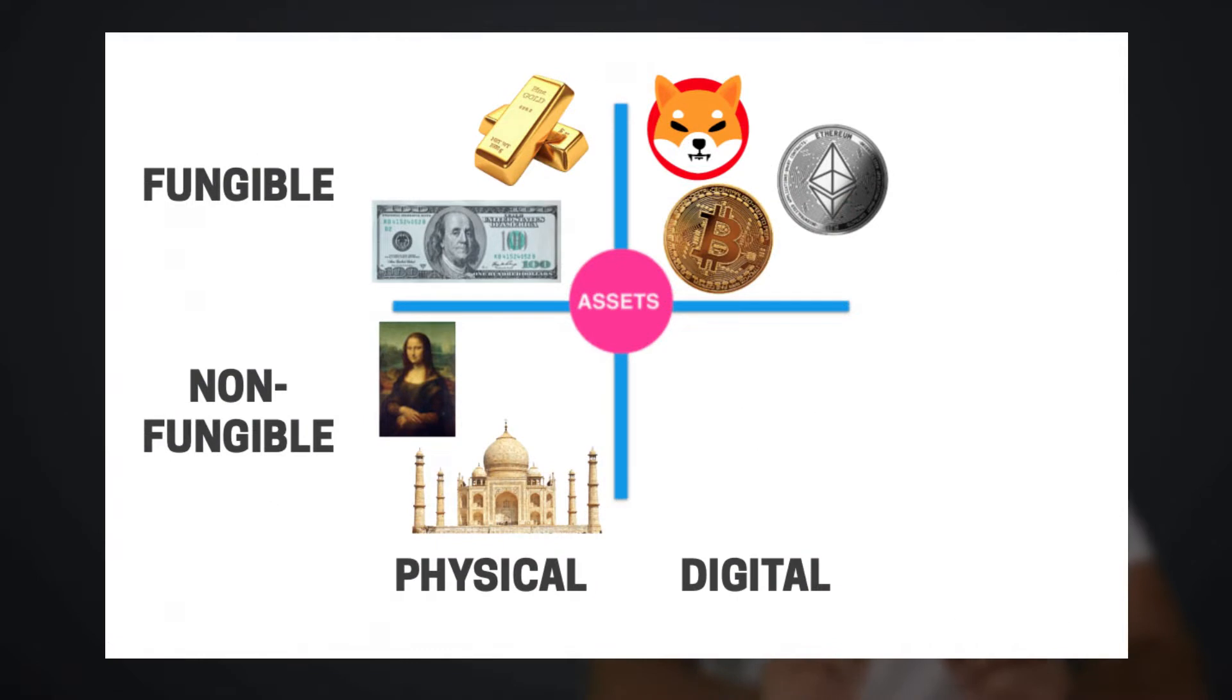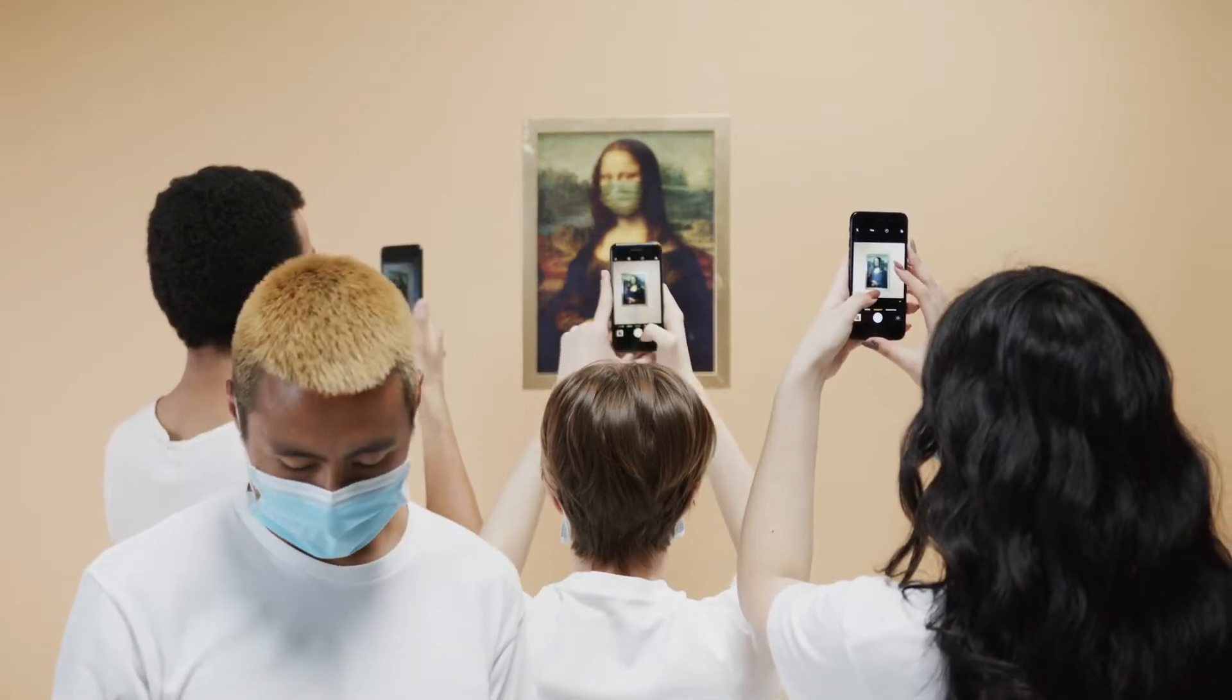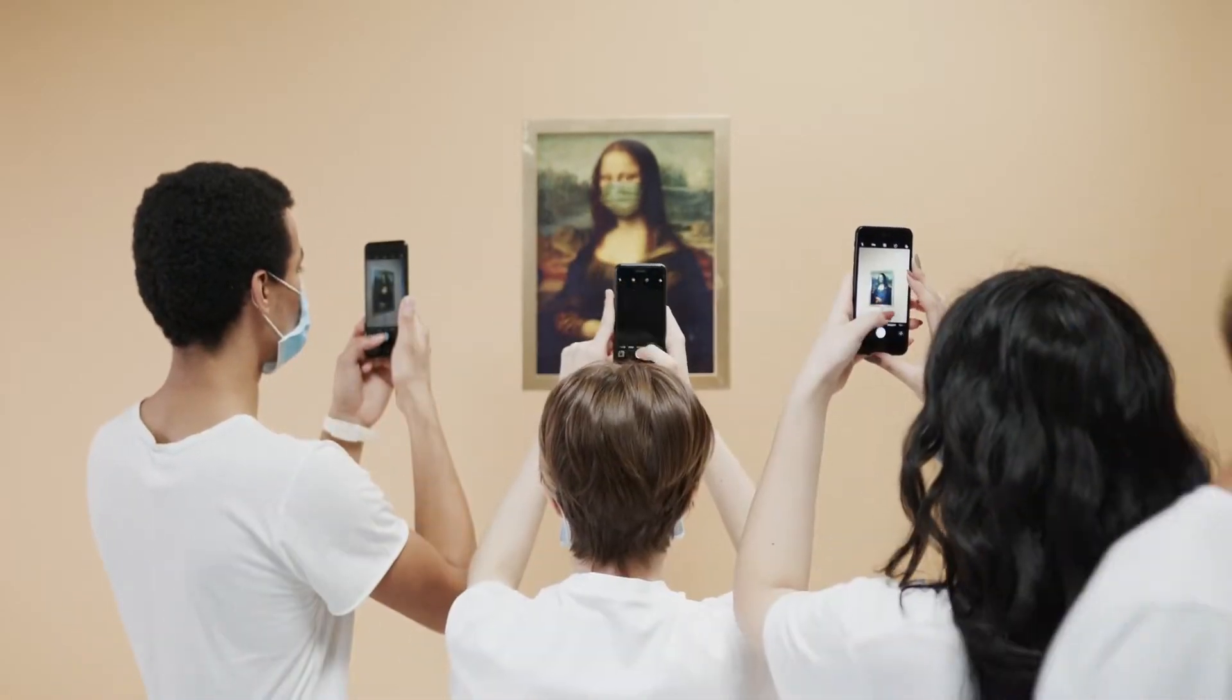At the bottom, we have a non-fungible form of physical asset. So these are unique assets like your Mona Lisa painting. It's a unique asset. You cannot have two Mona Lisa paintings. Yes, you can have duplicates of it, but the original art is only one.